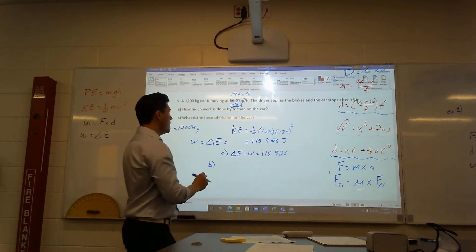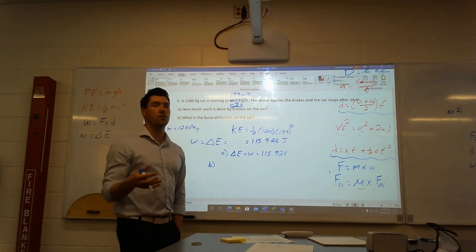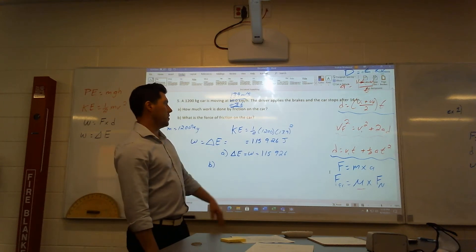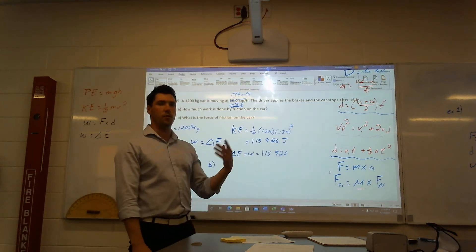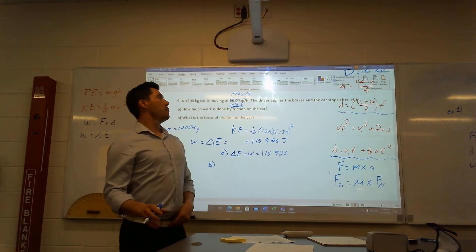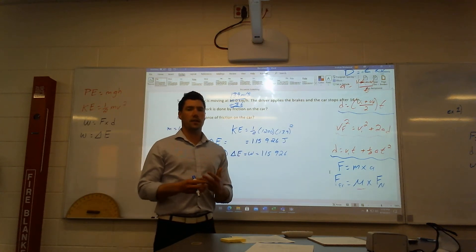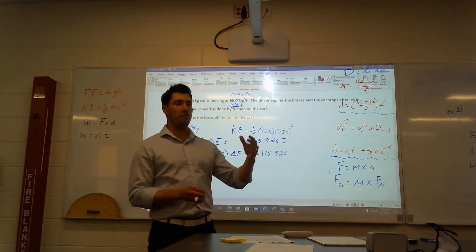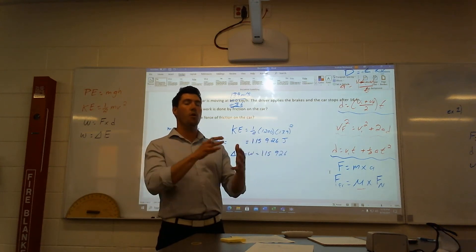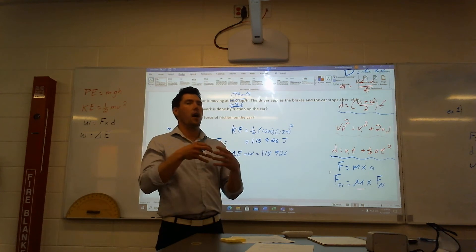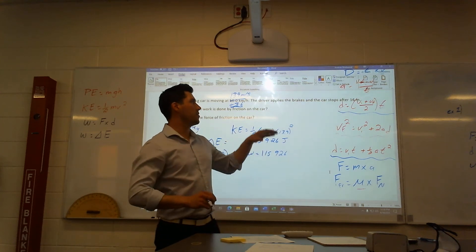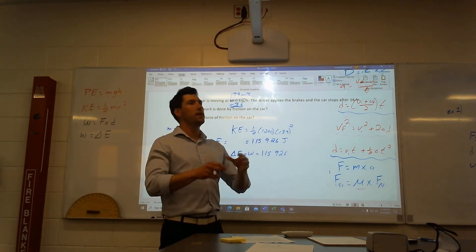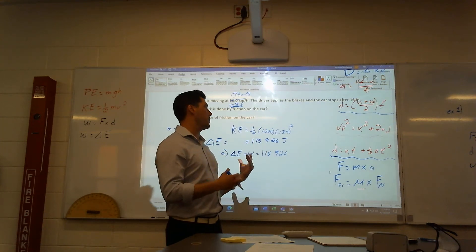At the very end, we have a stopped car, which means my velocity is zero. And if my velocity is zero at the very end, my kinetic energy is zero. So this is my change in energy. My change in energy, also known as my work, is 115,926. So there's that first part, there's A.